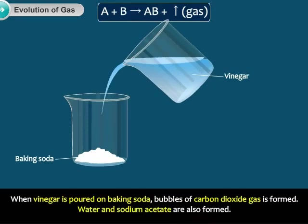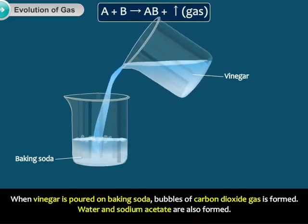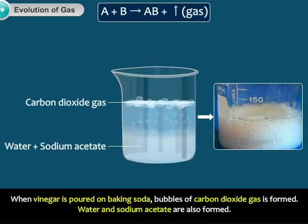When vinegar is poured on baking soda, bubbles of carbon dioxide gas are formed. Water and sodium acetate are also formed.